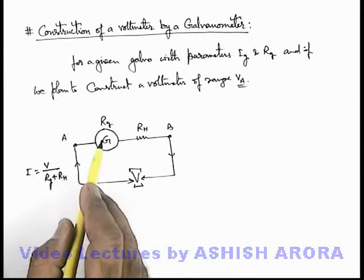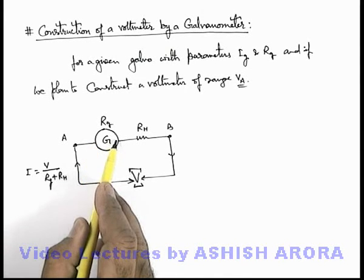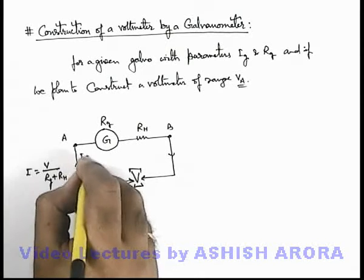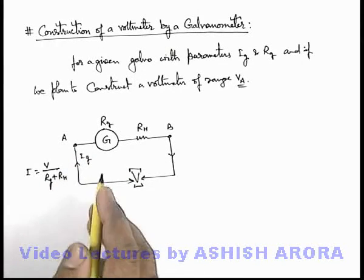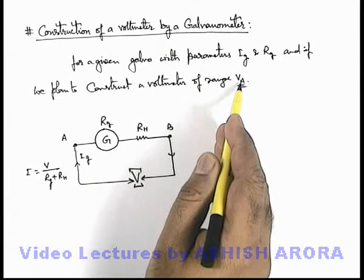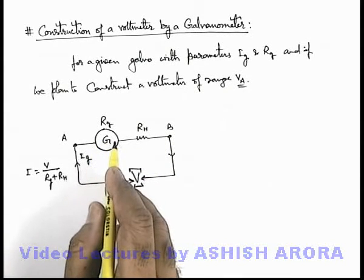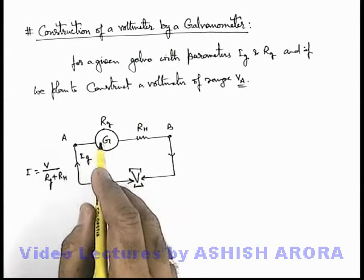Now we know well that the galvanometer will be deflected by full only when a current I_g flows through it. So if we wish to make it a voltmeter of range V_a, then the very first thing we need to change the scale of this galvanometer from zero to V_a.